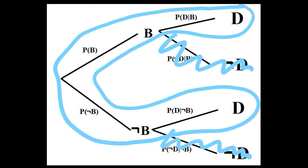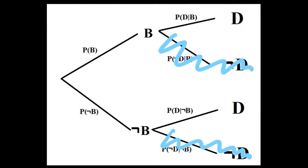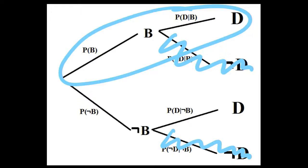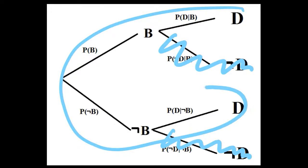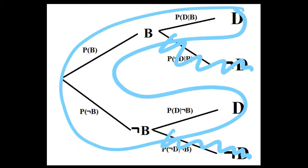So what's the probability we're on the top part of the decision tree, given that we have the defective Frisbee? We need to find the probability of being on the top part of the decision tree, given this total probability. We need to divide the chance that we are in the new machine area by the chance that we have of being in the entire area of having a defective Frisbee — the total probability of having a defective Frisbee, this entire area.